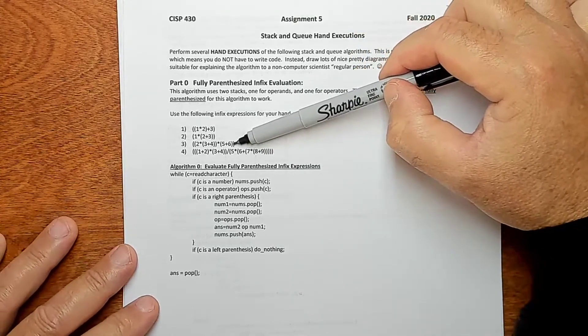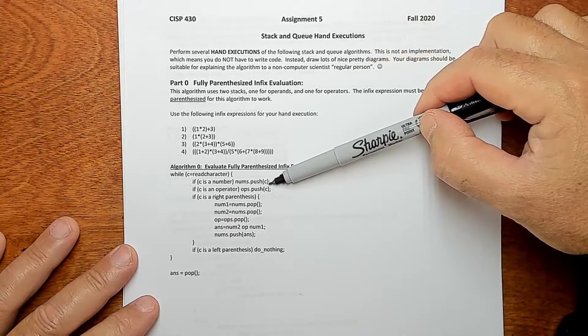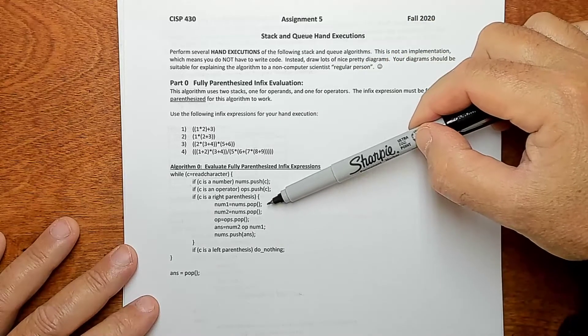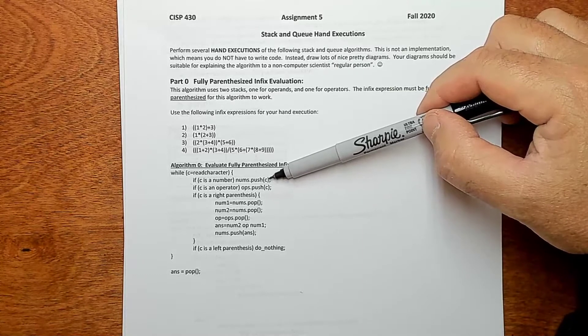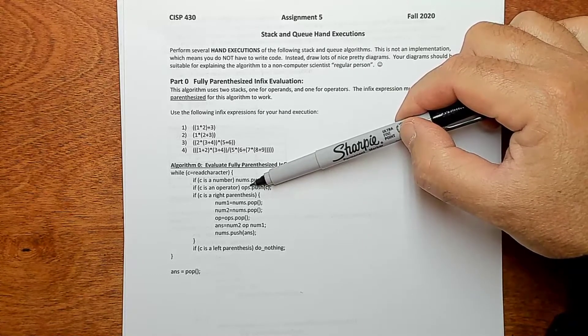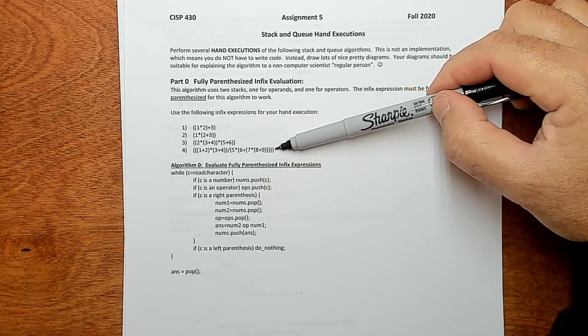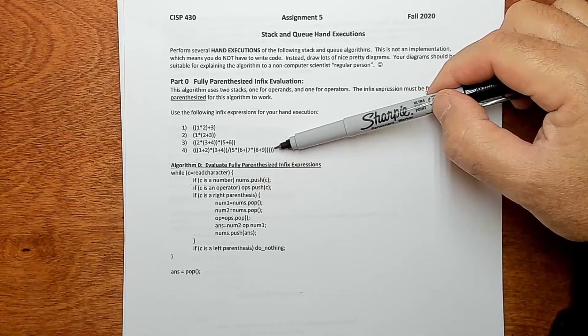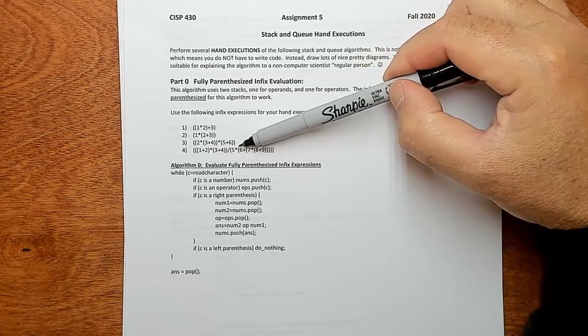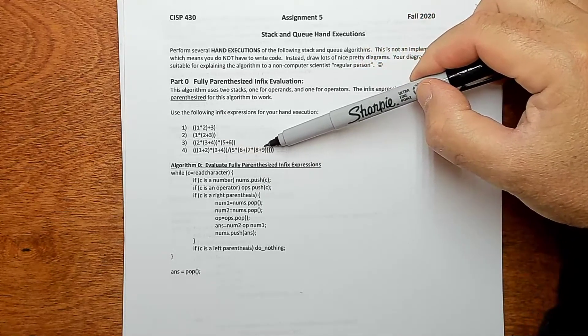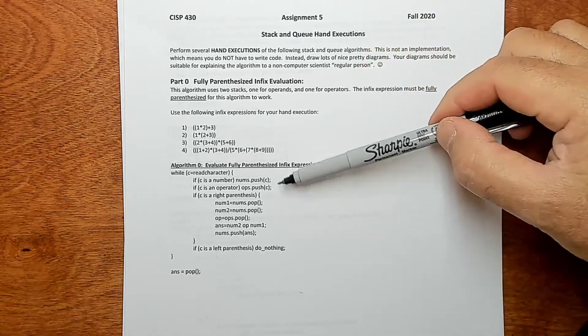But anyway, it's just going to evaluate these and it only uses a stack because, well, actually it uses two stacks. So you got to have a stack named nums and a stack named ops. And it requires that the expression be fully parenthesized. That's why this guy has like a zillion parens because I've got a plus operation, a times, a plus, a divide, a times, a plus, a times, a plus. So it's got to have a pair of parentheses for every one of those operations. This algorithm only works if it's fully parenthesized.